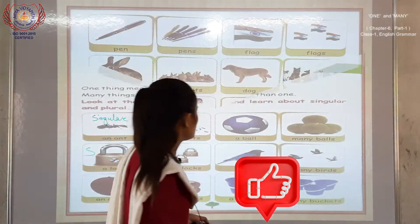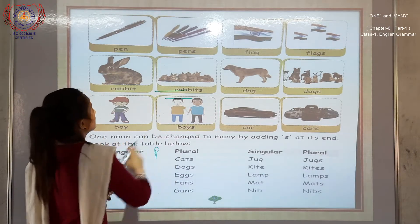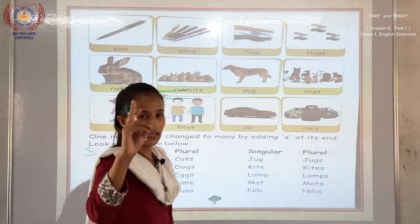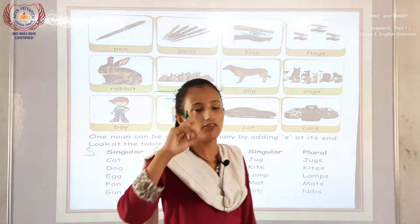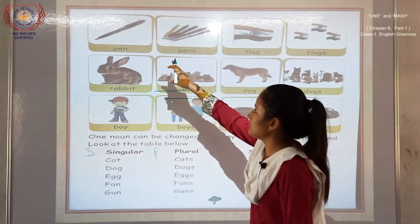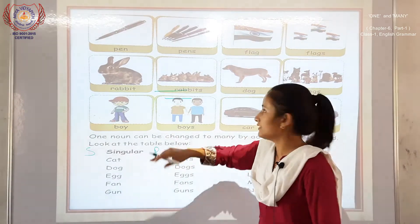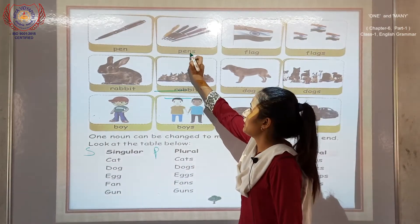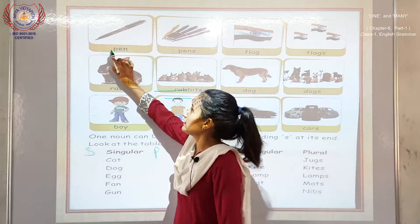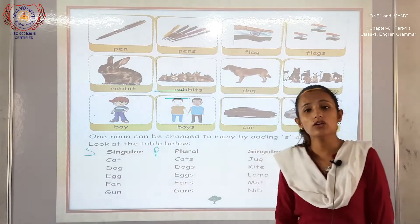In the next page, you can see there are some examples. Pen — P-E-N — means one pin. He or she has only one pin, so that is singular. She has so many pens — P-E-N-S. When S is added, what does it become?